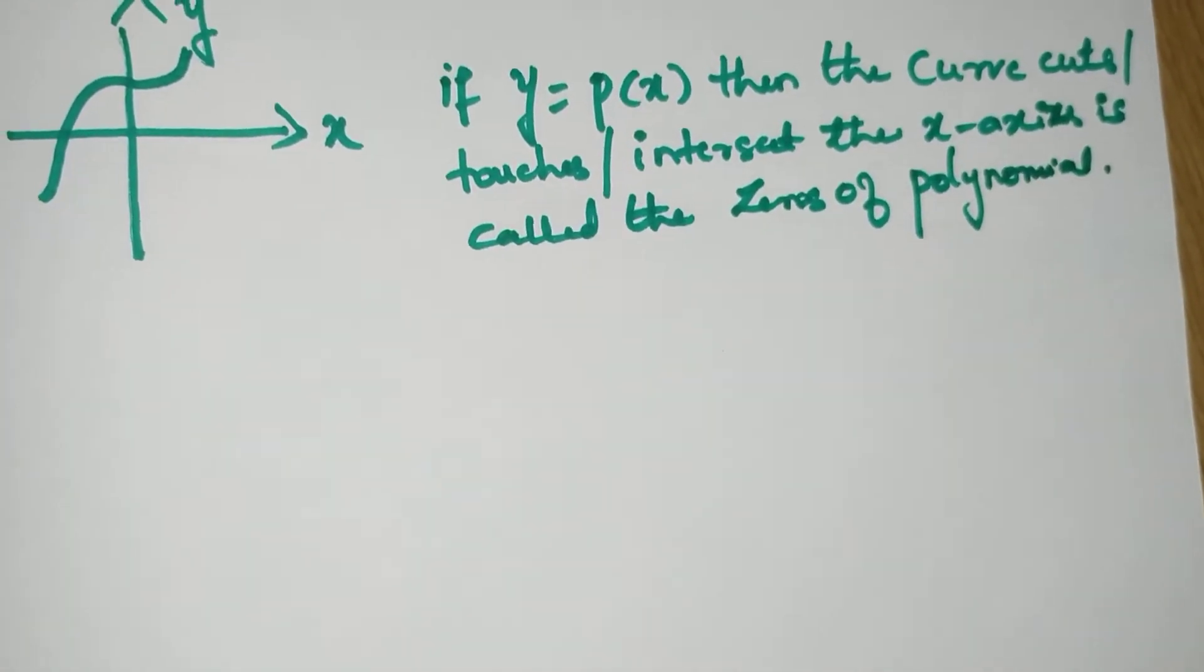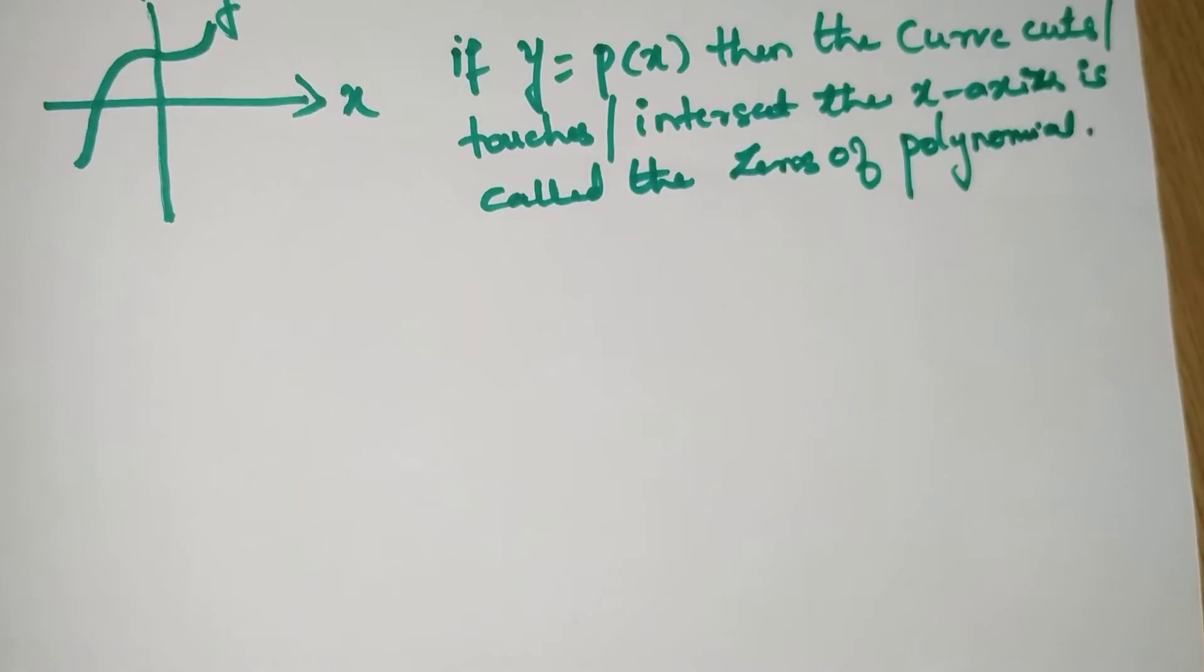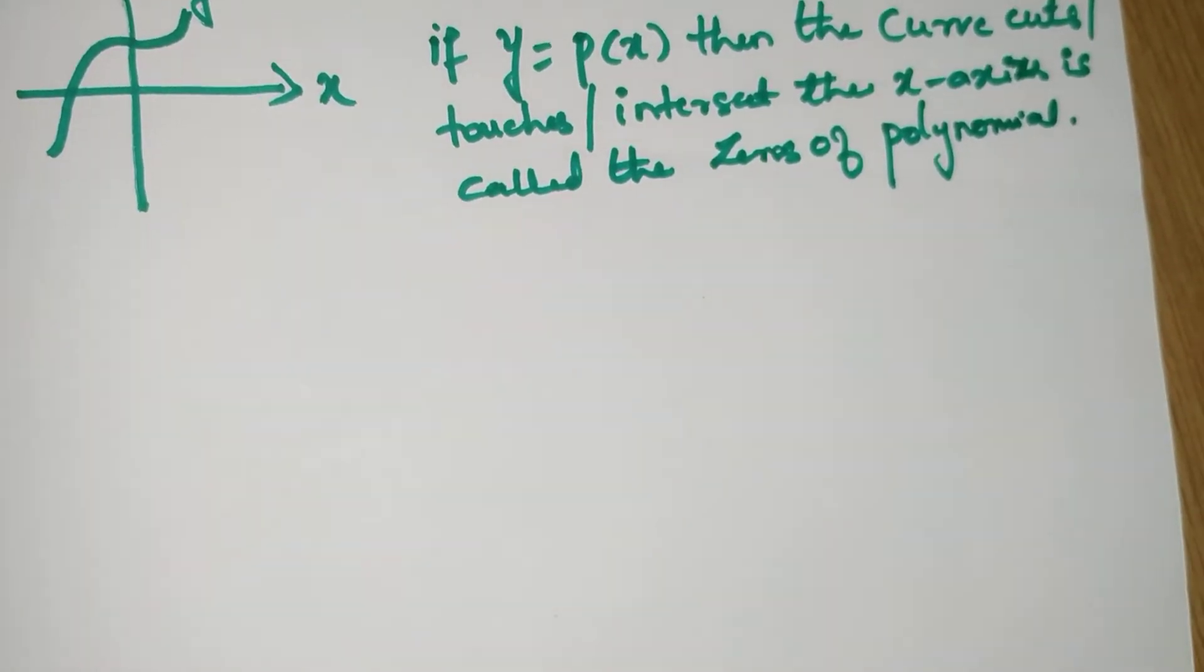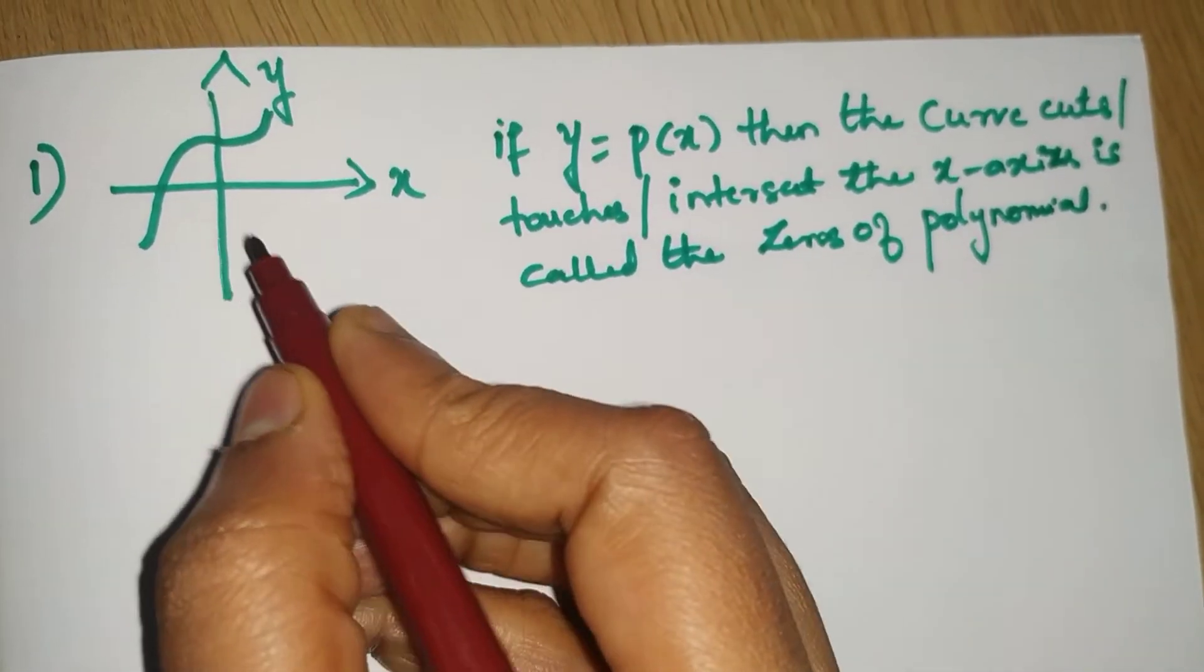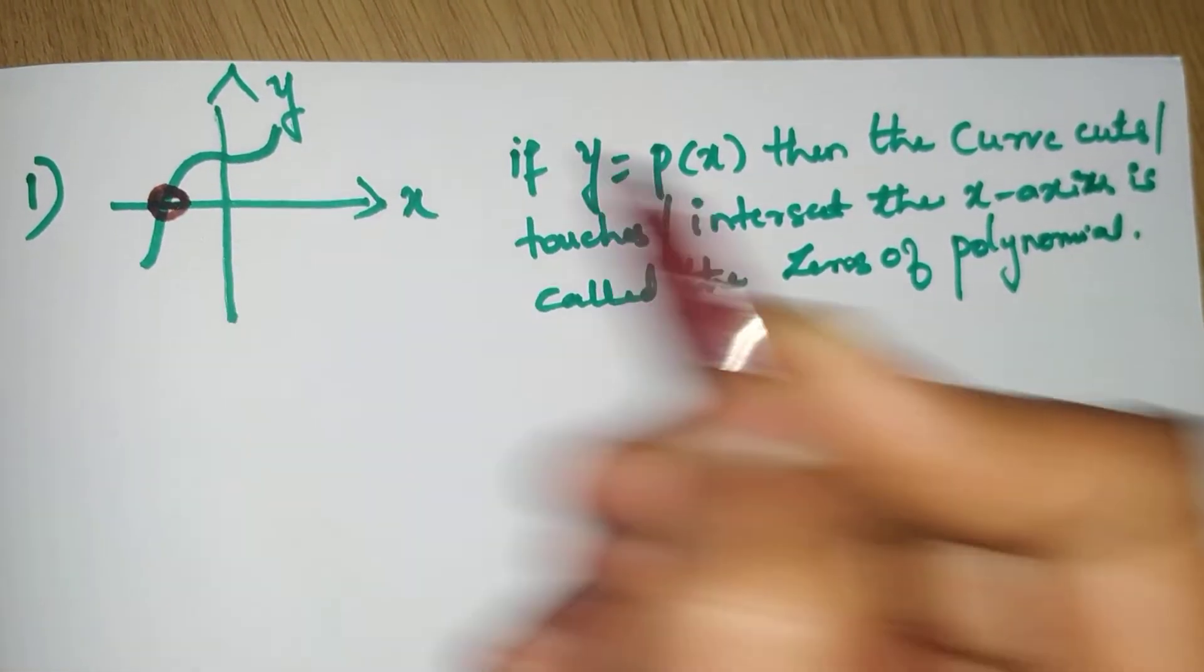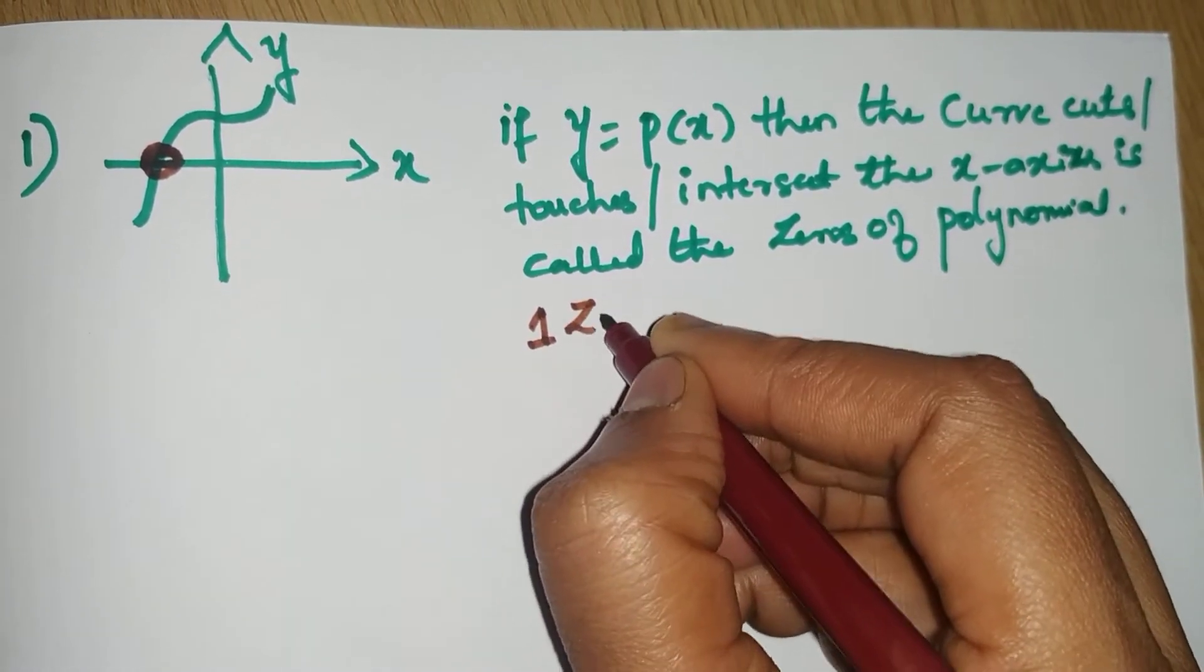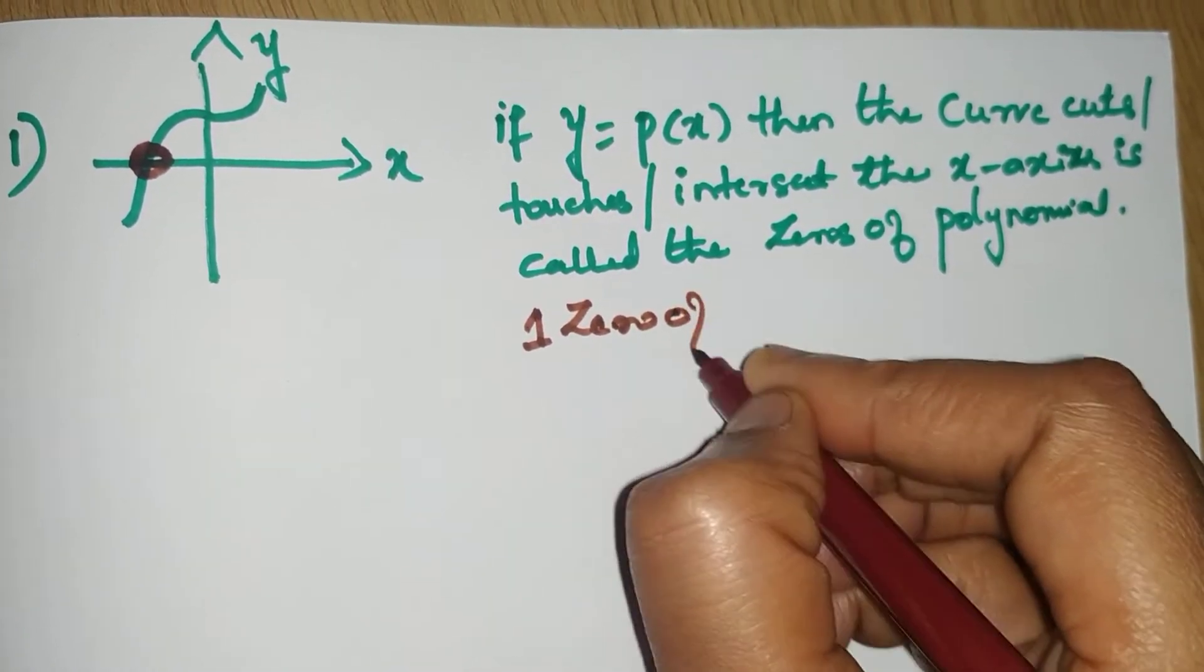So now you can see this, we have a curve which touches the x-axis only at one point. So we have one zero of polynomial.